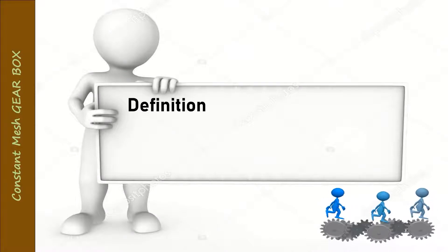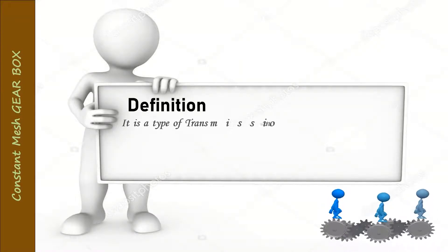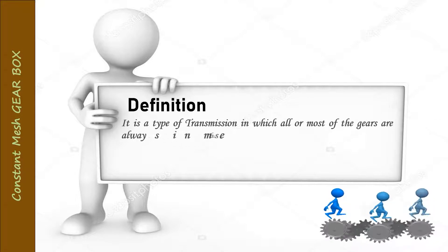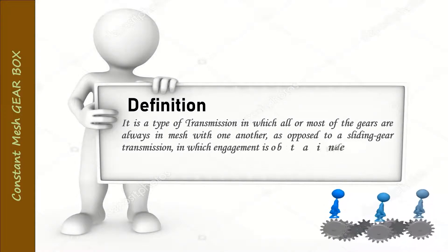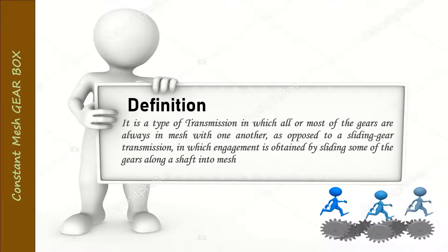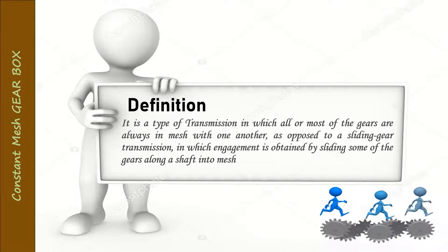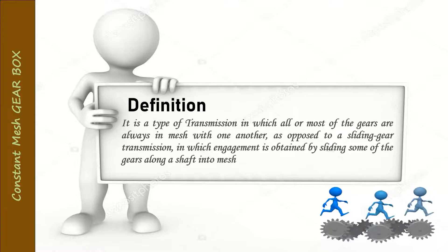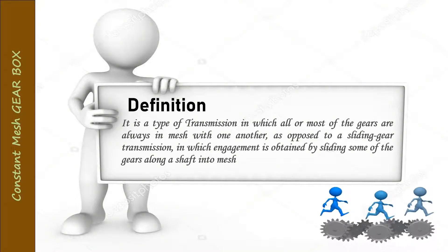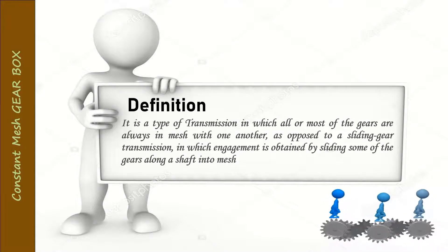The definition of the constant mesh gearbox: it is a type of transmission in which all or most of the gears are always in mesh with one another, as opposed to a sliding gear transmission in which engagement is obtained by sliding some of the gears along a shaft into mesh. In a constant mesh gearbox, the gears always remain in mesh together.